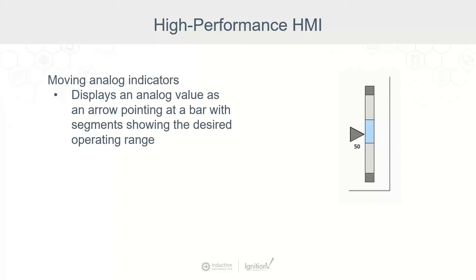Moving analog indicators are a great way of displaying whether a value is within a desired operating range or not. If I just see a value, I have to do mental math to know if it's in the right range. But with the analog indicator, I can see very quickly that it's within that blue range. We can use these throughout entire applications, and they will also let us know if a value is outside those ranges by using color like red or orange when there are issues. The contrasting colors are really important here, which is why it tends to lead to more grayscale overall.